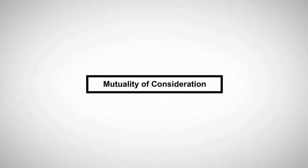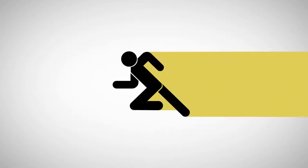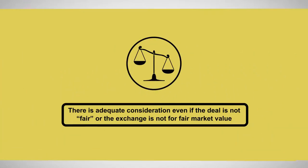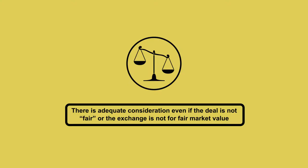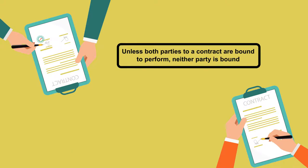Consideration comes in numerous forms. An adequate form of consideration may be a promise or a performance. There is adequate consideration even if the deal is not fair or the exchange is not for fair market value. However, the general rule is that unless both parties to a contract are bound to perform, neither party is bound.